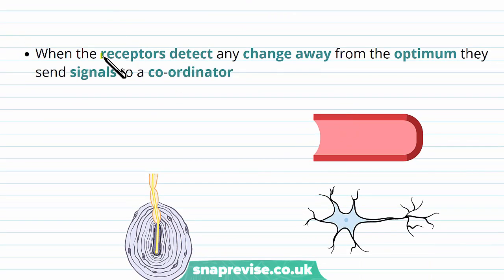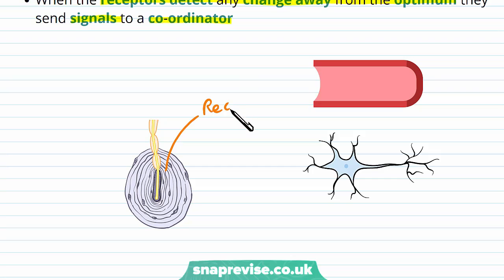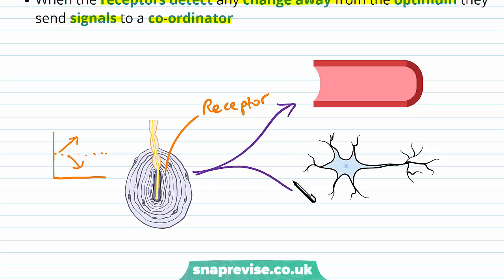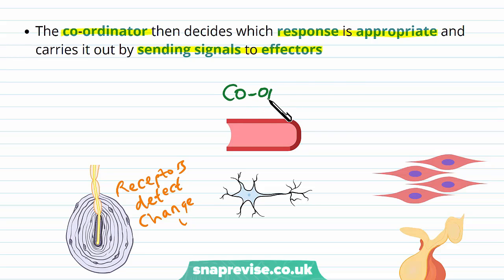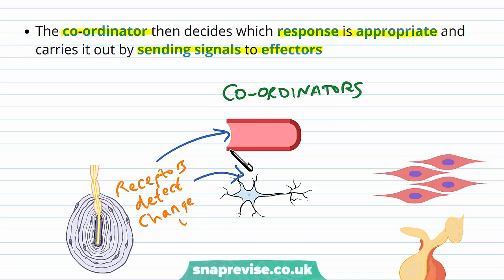Whenever a receptor starts detecting any change away from the optimum, it needs to send signals to our coordinators. For example, temperature receptors detect any increase or decrease away from the optimum temperature and send signals to a coordinator so that it is told what's changing. The coordinator is what then decides which response is appropriate and carries it out by sending signals to effectors. So the overall picture is: receptors detect a change, they signal to the coordinators, which process the change and decide what needs to be done to reverse it, then send out signals to effectors.